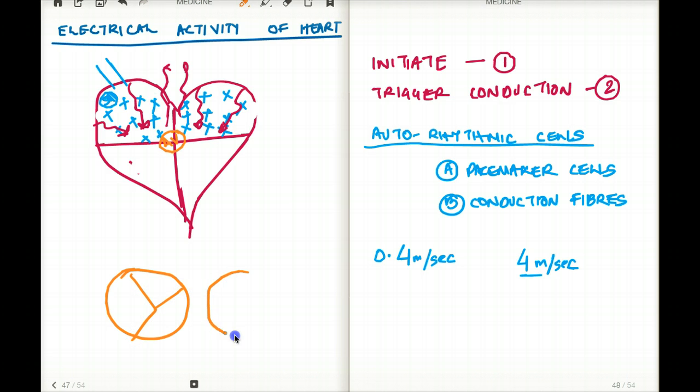What am I drawing? Try to guess. Okay, so this is the tricuspid valve, and this is the bicuspid valve. The AV node is right here, between the atria and the ventricle, and between the two valves, right in the middle, between the atria and the ventricle, and the bicuspid and the tricuspid valve.